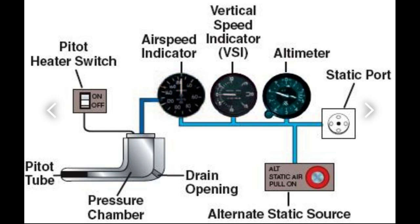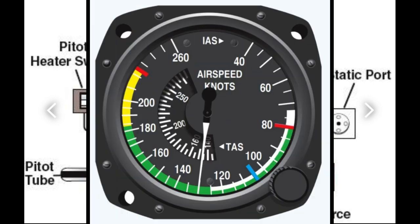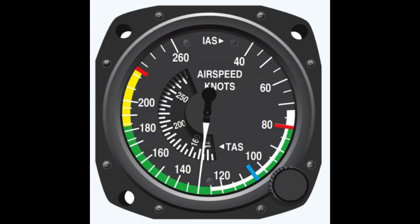The ASI measures and displays the aircraft's speed using the pressure differential in the pitot-static system. The ASI in the majority of aircraft shows speed in knots or miles per hour. The aircraft's current indicated airspeed is represented by a needle, IAS. Standard color-coded markings offer stall, flap setting, normal operation, caution, and never exceed speeds.